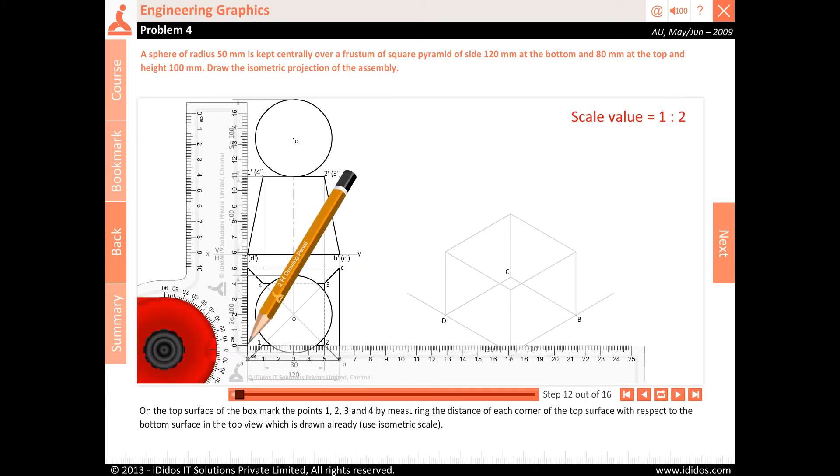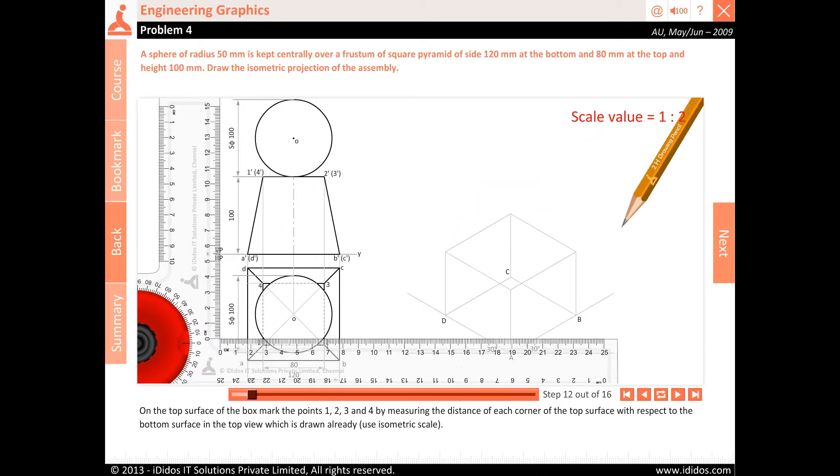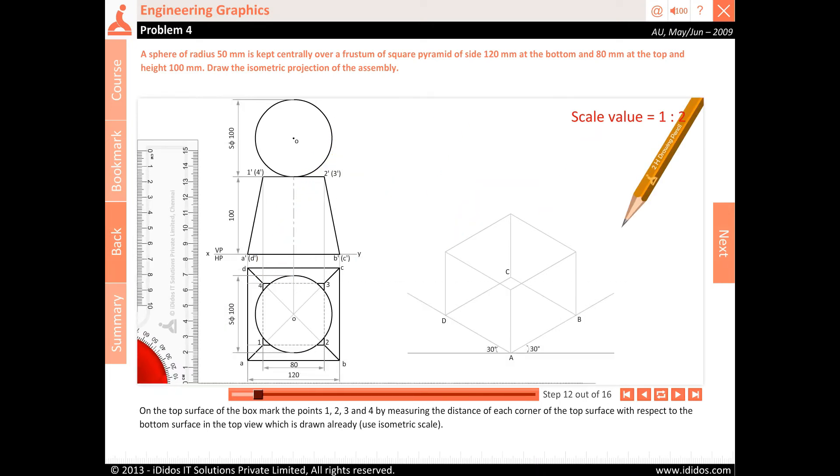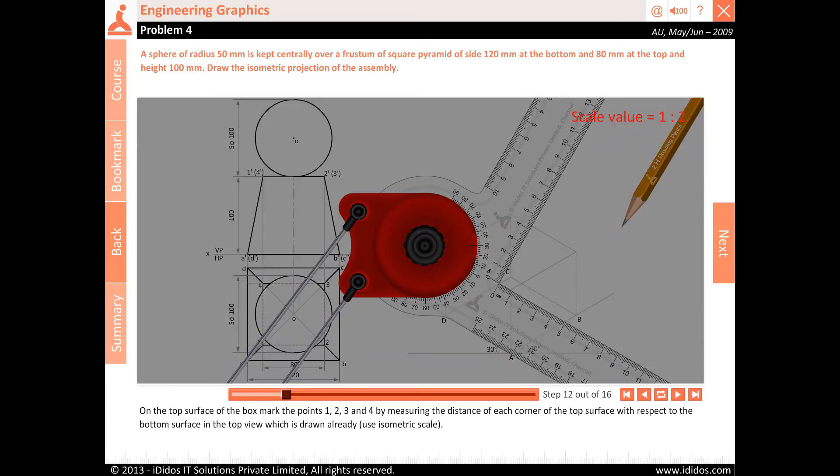On the top surface of the box, mark the points 1, 2, 3 and 4 by measuring the distance of each corner of the top surface with respect to the bottom surface in the top view which is drawn already. Use isometric scale.